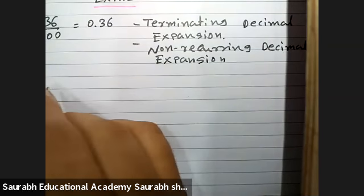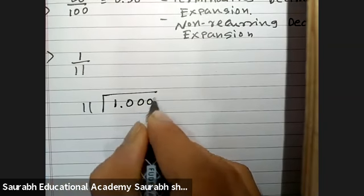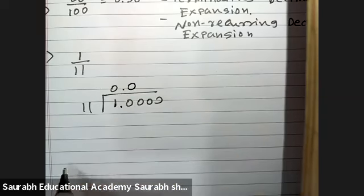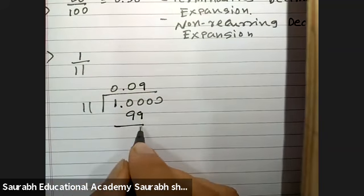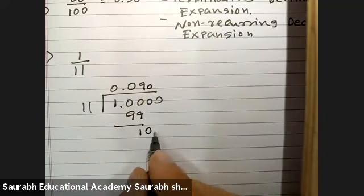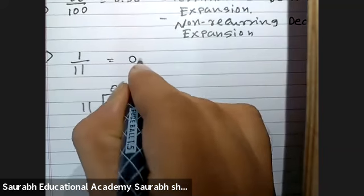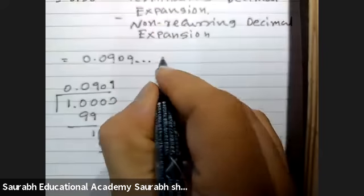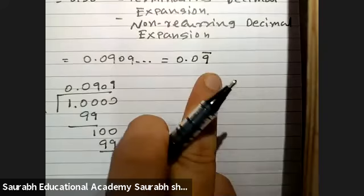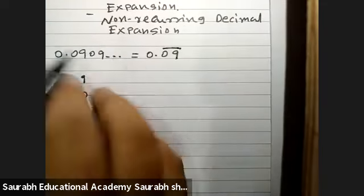Second: 1/11. Let us divide. 10 is not divisible by 11; 100 — 11 nines are 99, remainder 1; then 10 again, not divisible; 100 again — 11 nines are 99. So the answer will be 0.0909... and so on. It is recurring decimals, so we write 0.09 with a bar on both 0 and 9, meaning these two numbers are repeating.